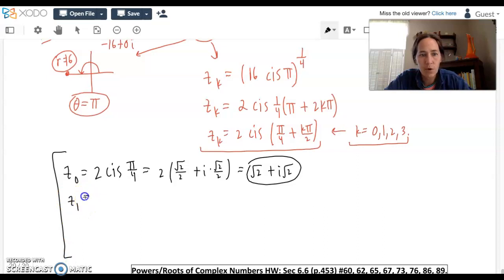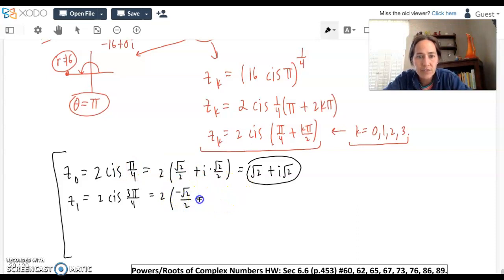Let's go for z sub 1. 2 cosine plus i sine, π over 4 plus half π, plus 1π over 2. So that should be 3π over 4. Add those together, and you get 2. Same values, just different signs. We're now in quadrant 2, where the cosine is negative. So negative square root of 2 over 2, but the sine of that angle is positive. So i square root of 2 over 2. So really, you can just cycle through the signs here. This one has a negative x value, and it's going to have a positive y value, i square root of 2. So far, so good.